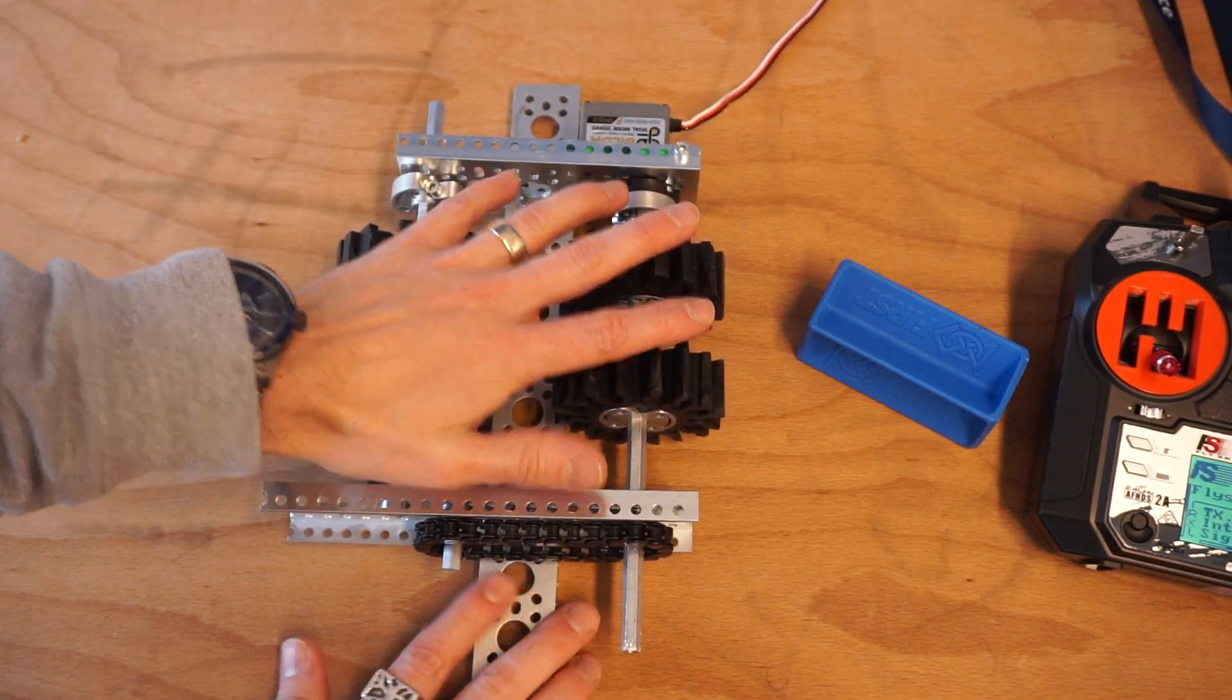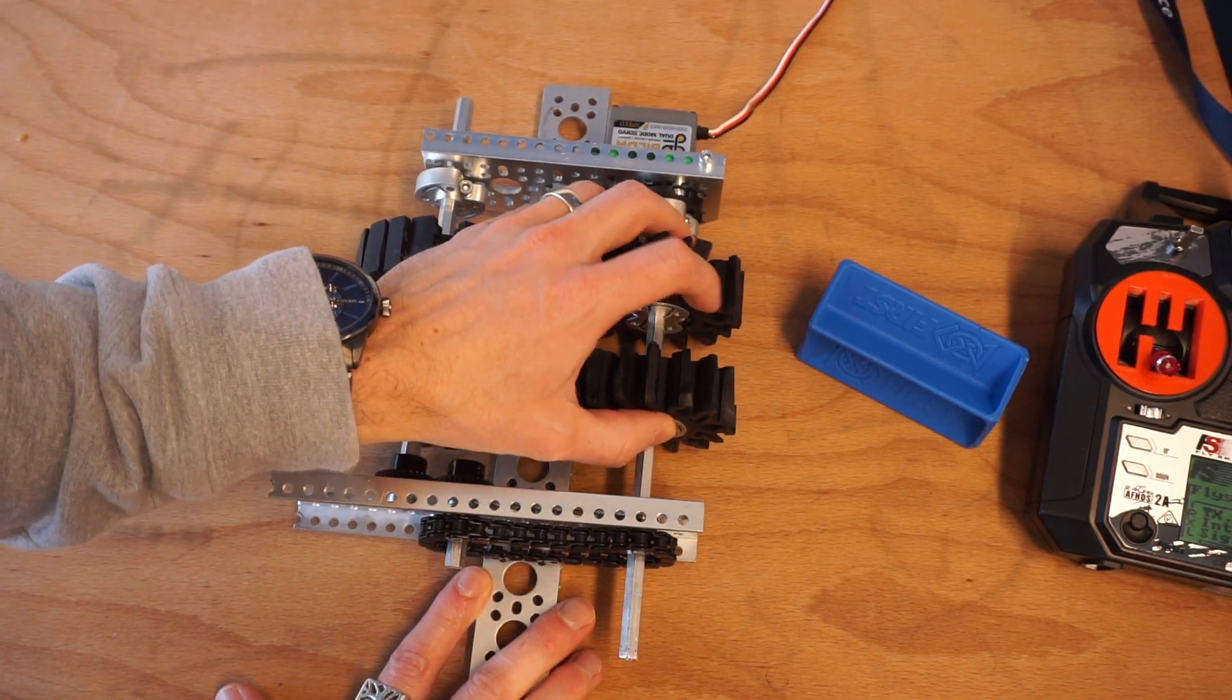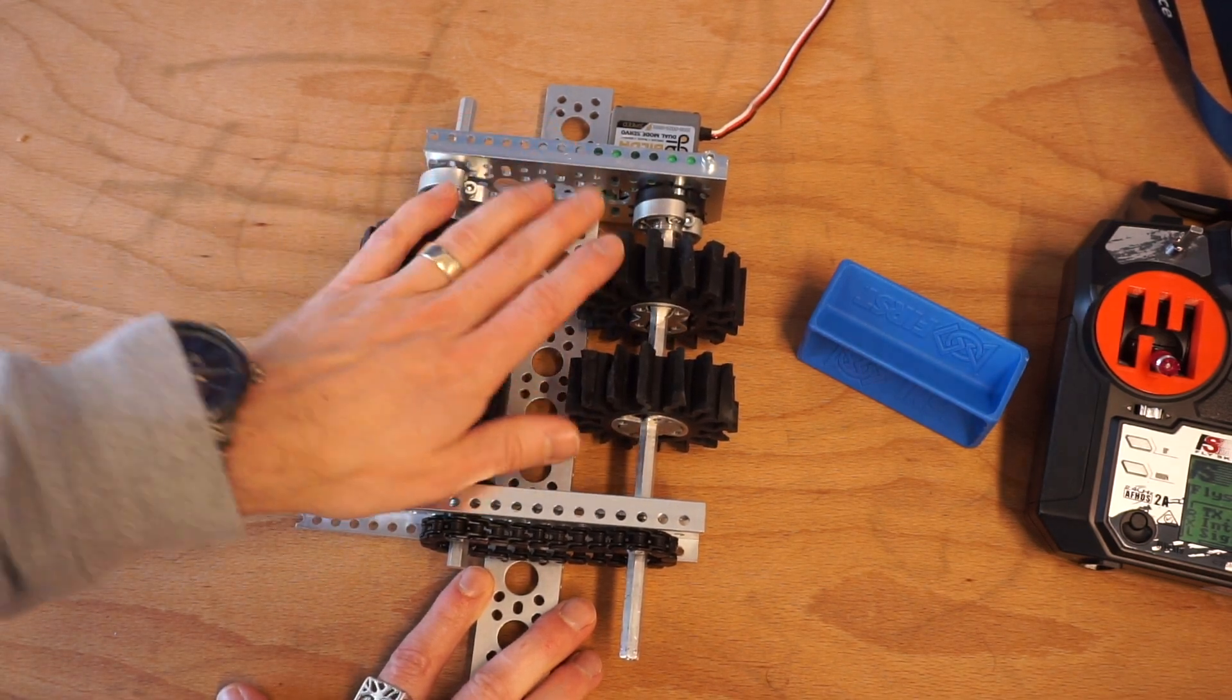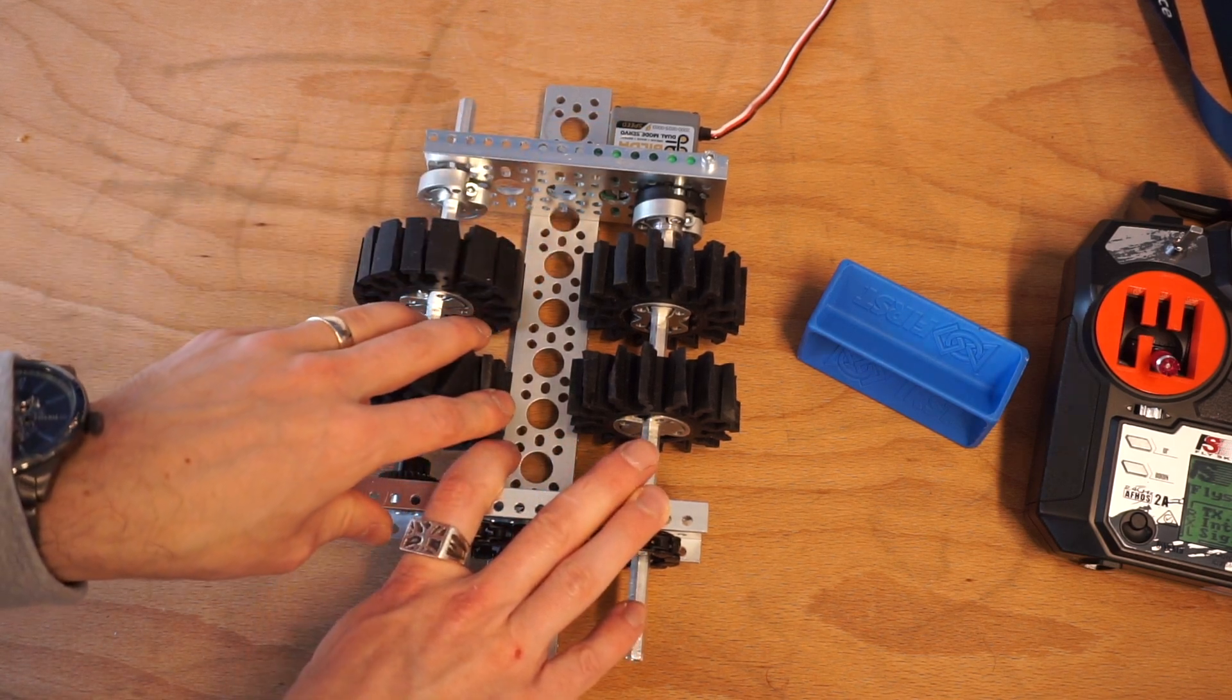But again remember this is just a seed prototype idea. It's not a complete idea but it does kind of get you started with thinking about how you might go about picking up different objects in an FTC way using compliant wheels. I hope that helped you out and best luck on your next robotics project.